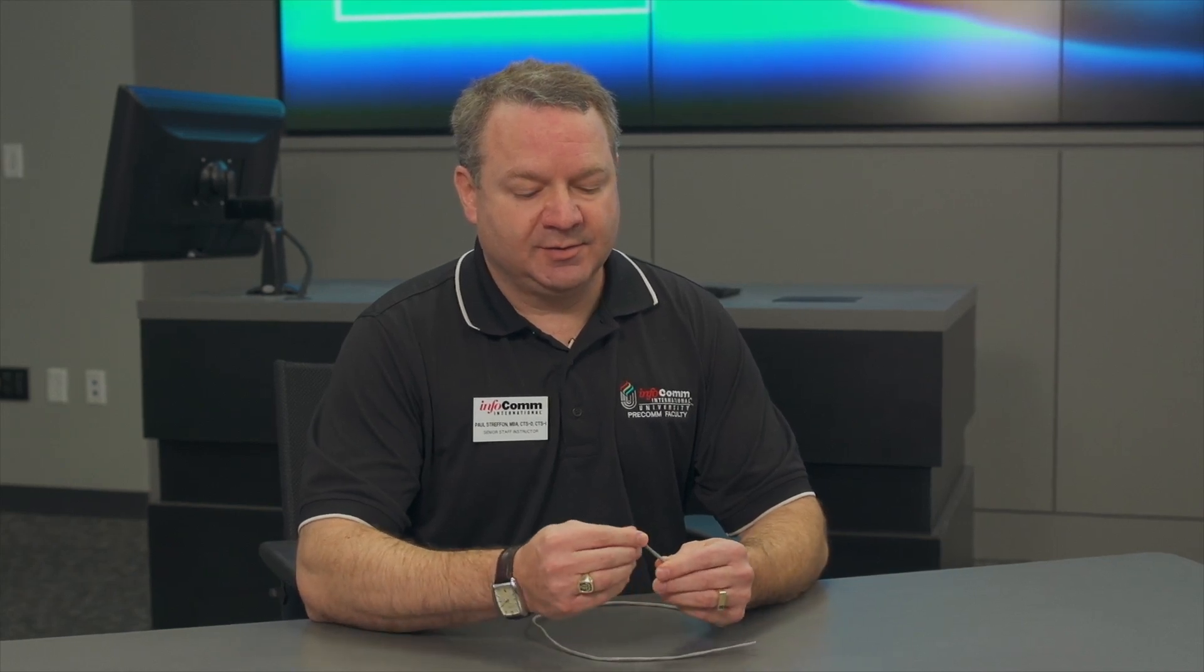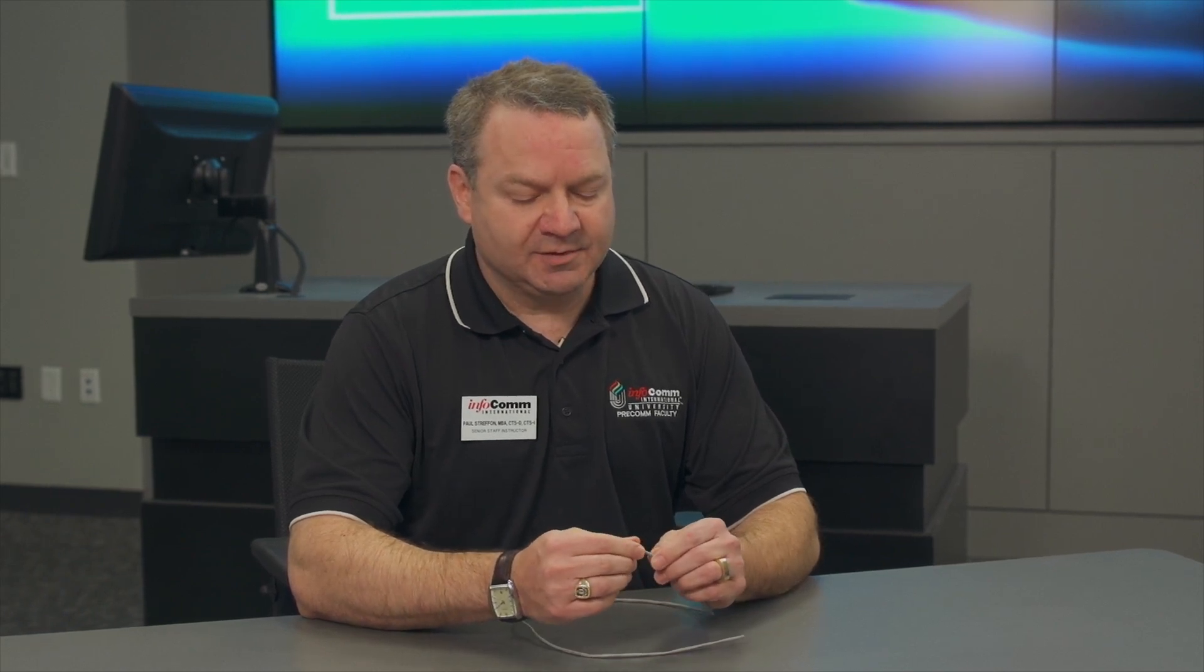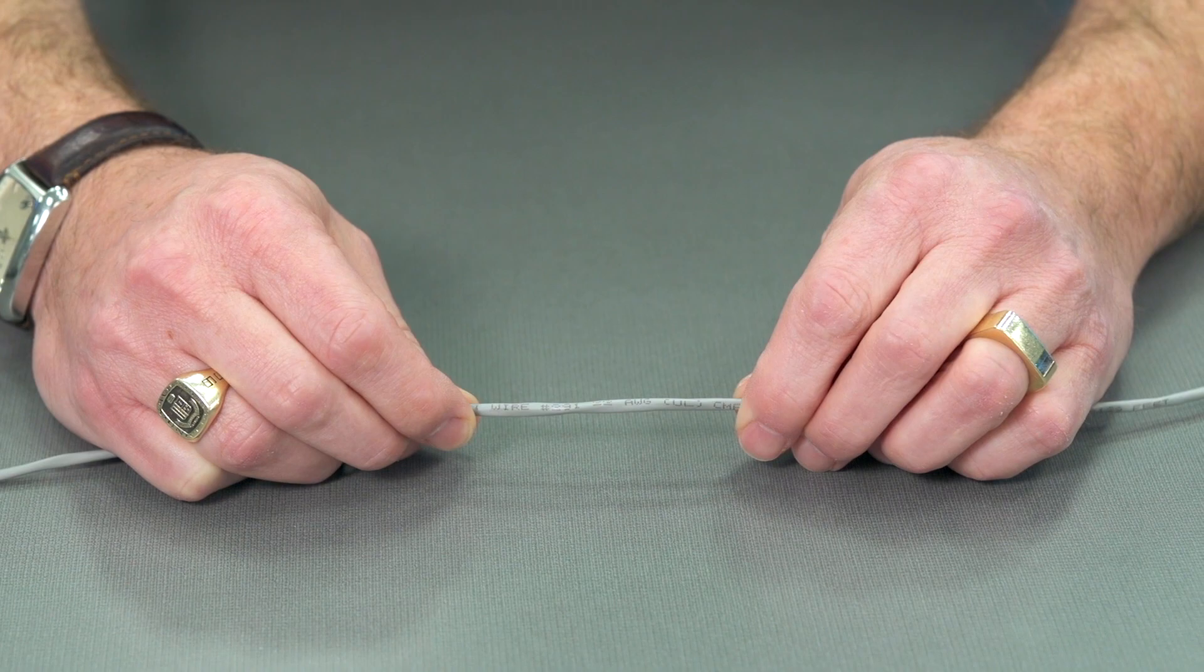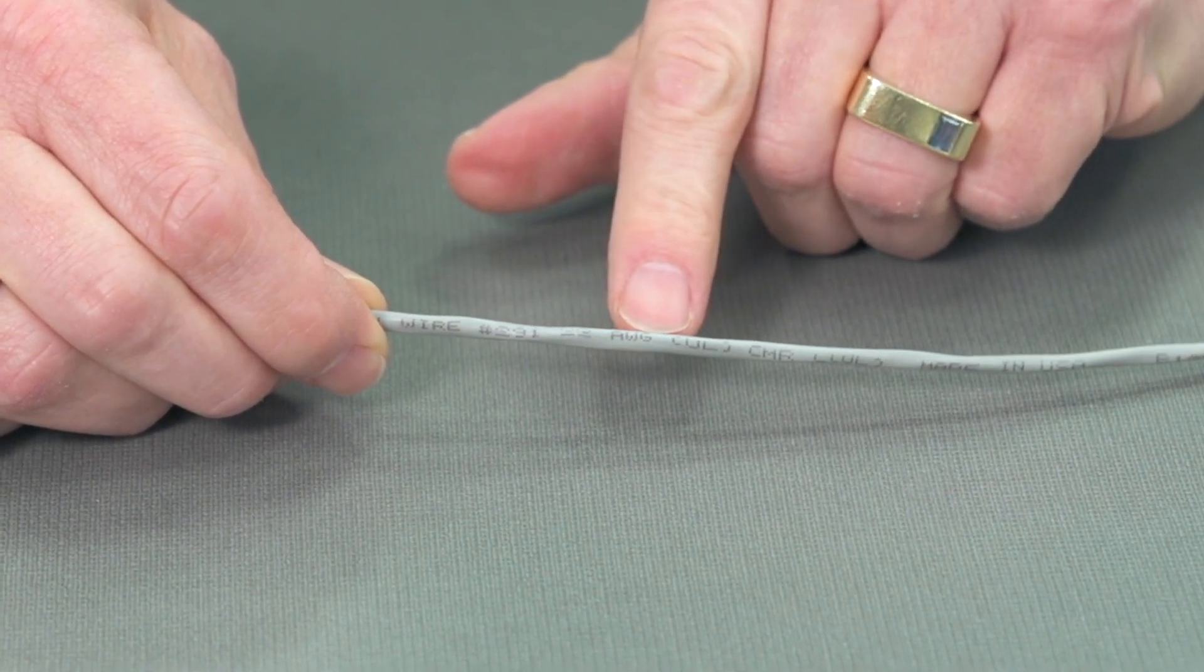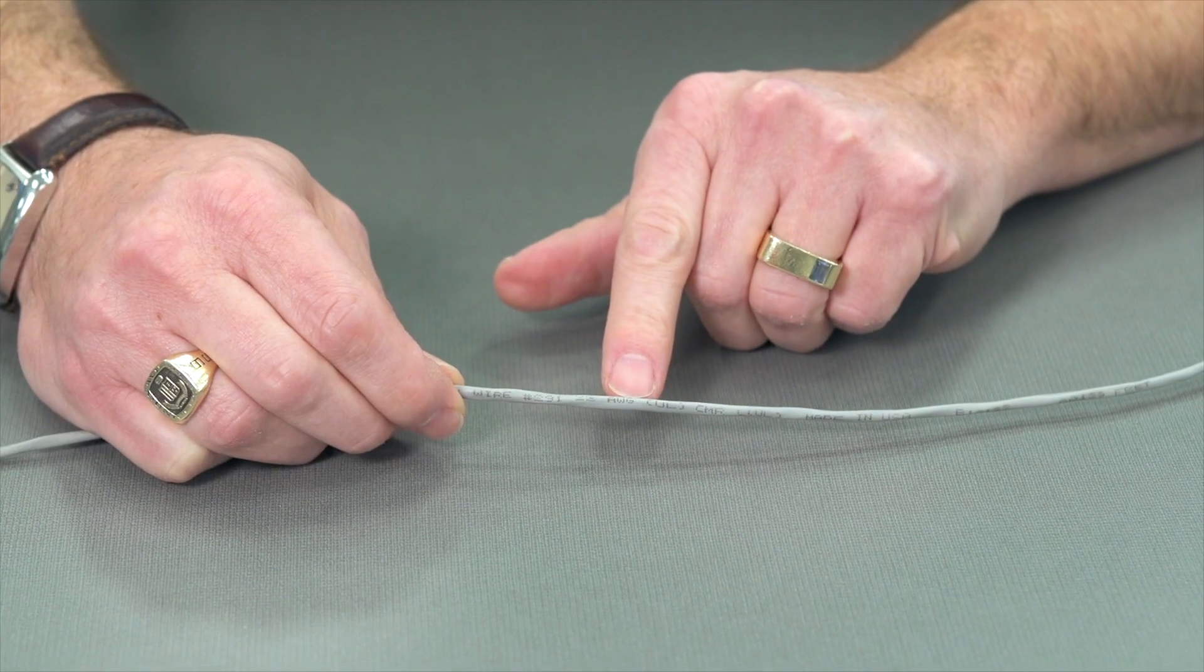And we're going to take a look at this, strip back the shield, strip the individual conductors, and prepare it for the next stage in the termination process. This is audio cable. It's 22 gauge. We can read that here. And that's important because we're going to be stripping and we need to have the proper size for our stripper.